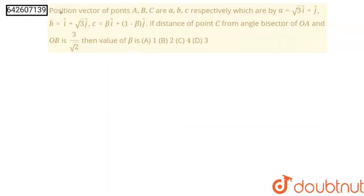Hello students, here question is position vector of points A, B, C are a, b, c respectively which are a = √3i + j, b = i + √3j, c = βi + (1 - β)j.